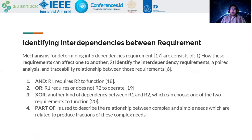The mechanism for determining interdependency requirements consists of: first, how one requirement can affect another requirement; second, identifying the interdependency requirement. There is also requirement dependency analysis and traceability relationships between those requirements.